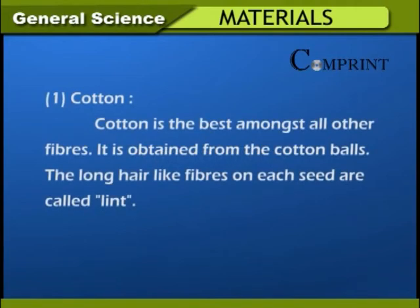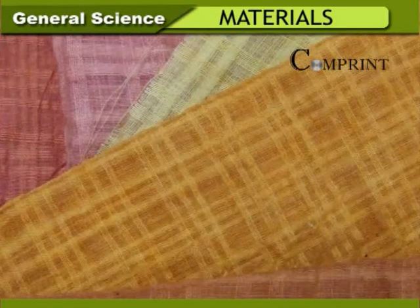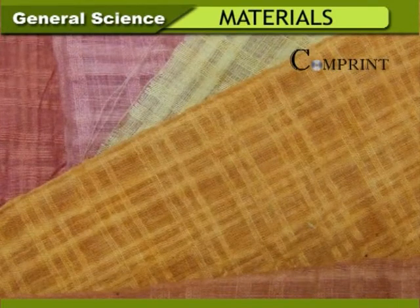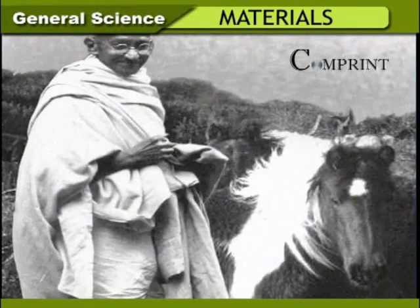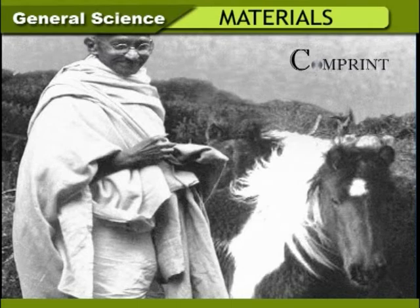Cotton is the best among all other fibers. It is obtained from cotton balls. The long hair-like fibers on each seed are called lint. Cotton is spun into yarn. Cloth made by spinning on hand looms is called khadi or khaddar. Gandhiji used to wear khaddar clothes. Cotton clothes give comfort to the body in summer.